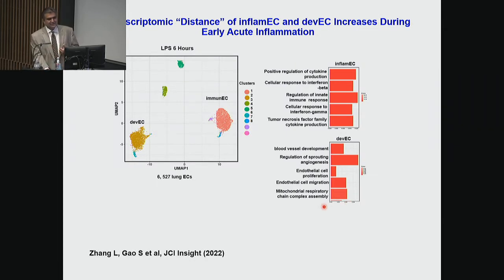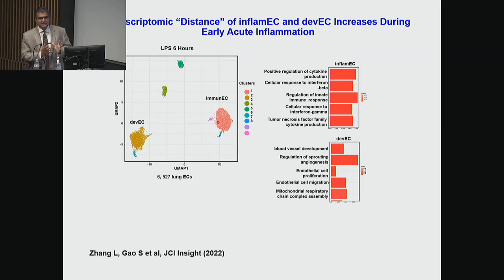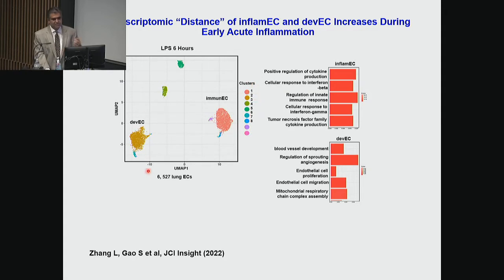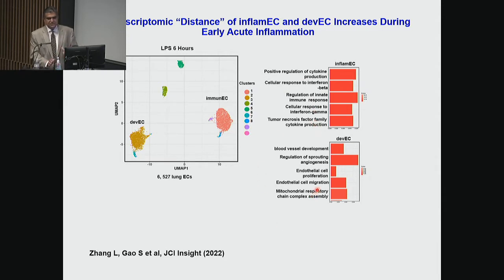Once injury occurs, as early as six hours later, this distance between populations increases. It's a UMAP, so it's not a linear distance and we shouldn't over-interpret it, but it becomes very clear that there are distinct cell populations, very clearly demarcated — this is Seurat clustering, also visualized nicely with UMAP. More of an inflammatory response in one population, and more of a developmental response in the other. These immune endothelial cells are the subpopulation we think really drives the interferon production and massive cytokine release. The developmental endothelial cells are still expressing genes as if ready to regrow and regenerate.